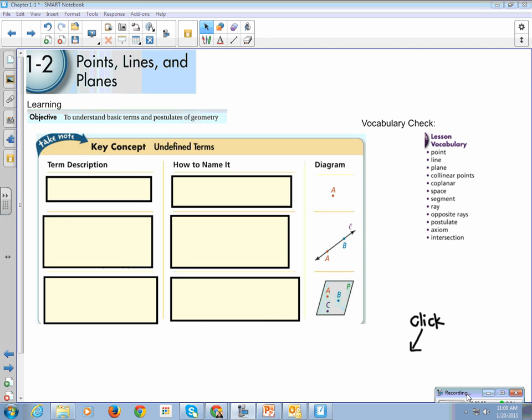Alright, so this is section 1-2, points, lines, and planes. Our learning objective is to understand basic terms and postulates of geometry. There's a ton of definitions. We're not solving equations, we're not measuring anything. We are just talking about basic terms and postulates.